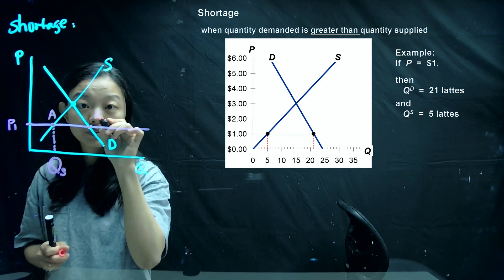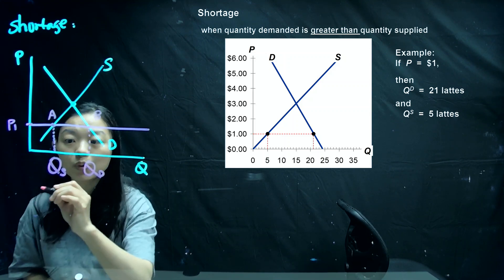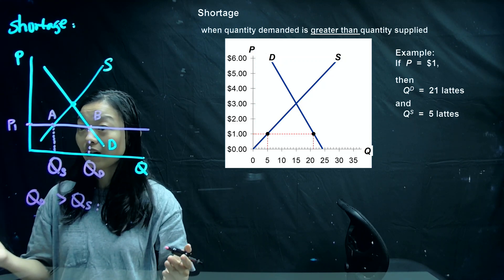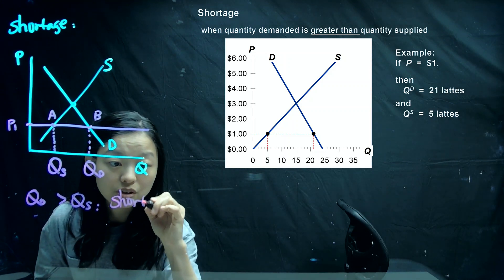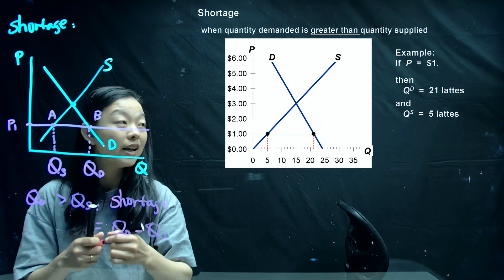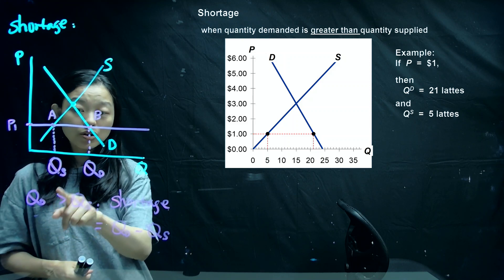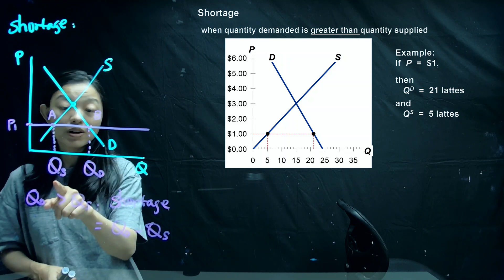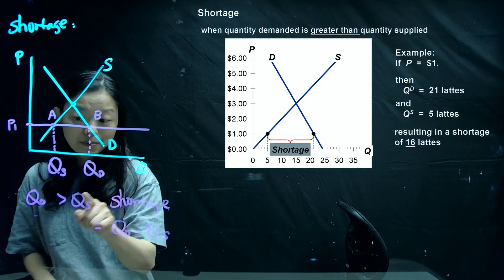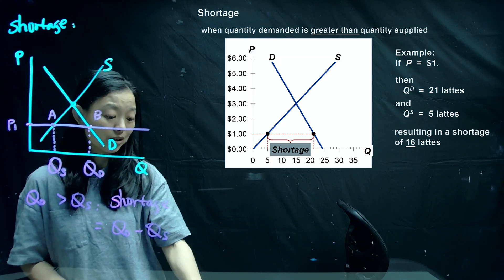In this case, we have quantity demanded larger than quantity supplied, which means consumers would like to buy more, but there are not enough products in the market — creating a shortage. The shortage equals quantity demanded minus quantity supplied. When price decreases to $1, quantity demanded increases to 21 units and quantity supplied is just 5 units, resulting in a shortage of 16 units.